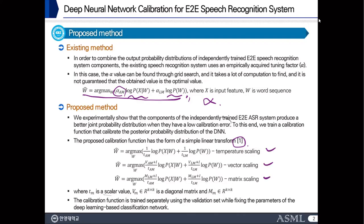In this case, T is a scalar value, V is a diagonal matrix, and M is a full matrix. The calibration function is tuned separately using the validation set while fixing the parameters of the deep neural network classification model.